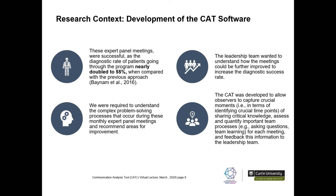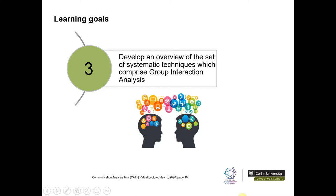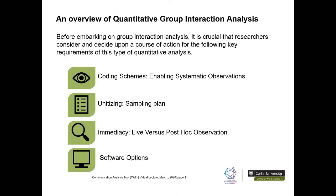Consequently, the CAT was developed to allow trained observers to capture crucial moments of sharing critical knowledge between the team and to assess and quantify important team processes. Before outlining the specific features of the CAT software, I want to provide you with an overview of group interaction analysis. Interaction analysis involves a set of systematic techniques to make valid interpretations from observations of naturally occurring interactions. Researchers must consider and decide upon several key requirements for this type of quantitative analysis.